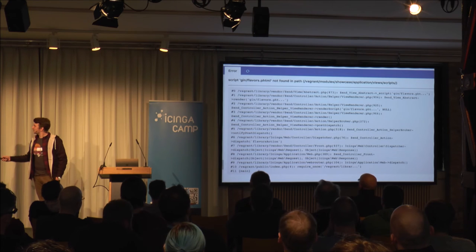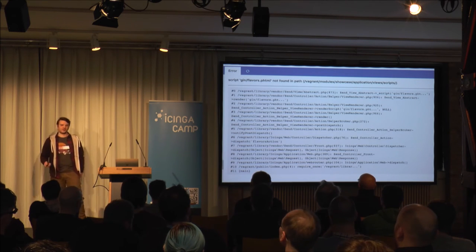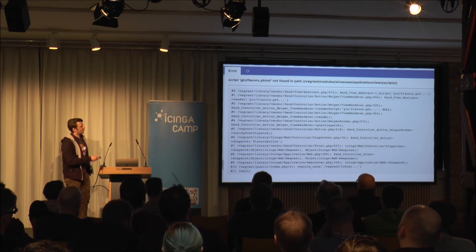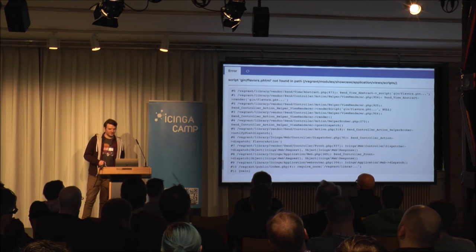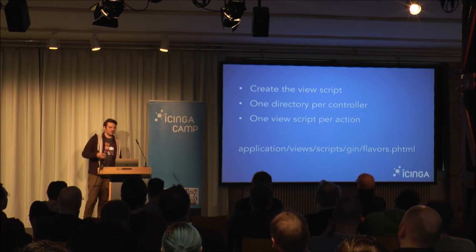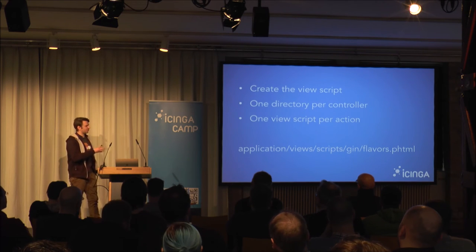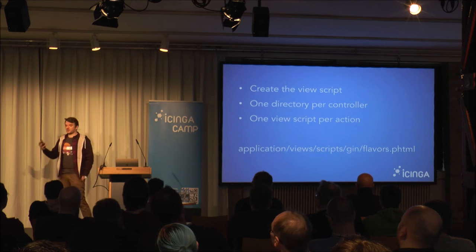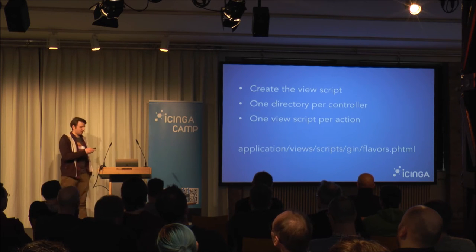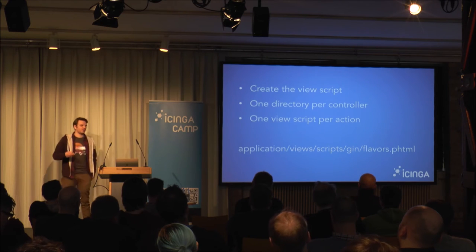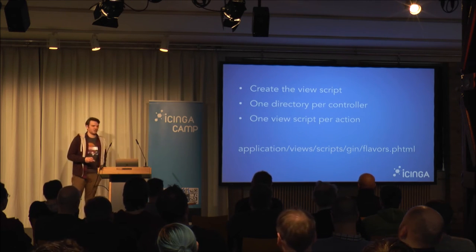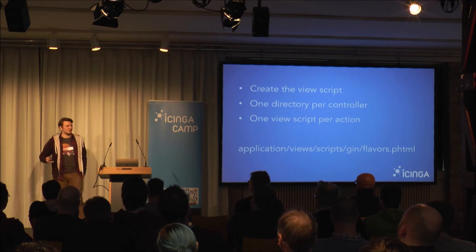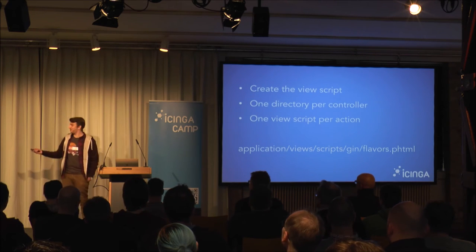The application tells us there's a view script missing, and it already tells us where we need the view script. We have application/controllers for our controllers and application/views/scripts for all our view scripts. In that directory there should be a directory for every controller — so we have a 'gin' directory and one view script called 'flavors.phtml'. It's .phtml because we mix PHP and HTML in this file.